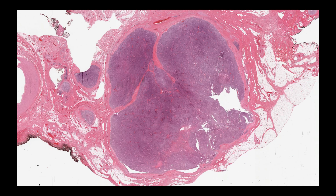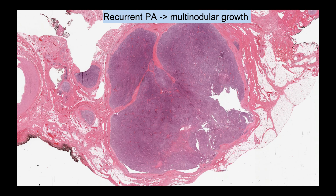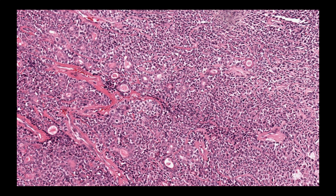This is an example of a recurrent pleomorphic adenoma. In recurrences, a multi-nodular growth pattern is typical — here we can see at least four nodules of different sizes. This case also shows a predominance of the cellular component, making it a so-called cellular or highly cellular pleomorphic adenoma. Reaching the correct diagnosis in such cases can be challenging, so proper sampling to identify areas with the characteristic chondromyxoid stroma is very helpful.